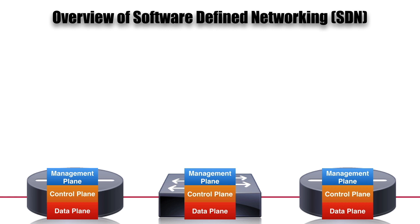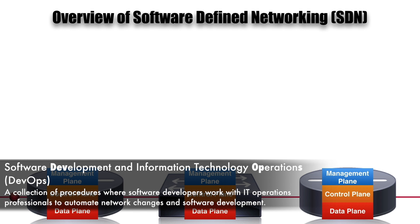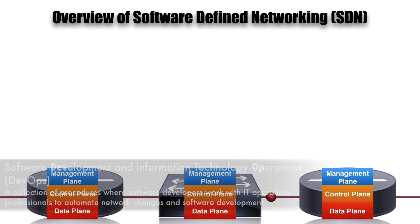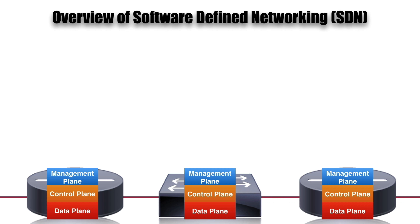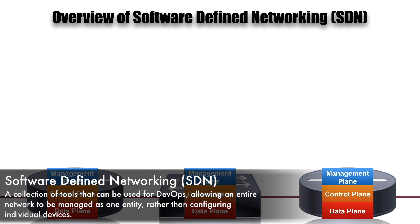As we get into our discussion of network programmability, there are a couple of terms we want to start with — DevOps and SDN. DevOps comes from combining software development with information technology operations. Instead of having software developers and IT operations professionals each working in their own silo, DevOps realizes they can complement one another — working in tandem to automate network changes and software deployment. SDN, software-defined networking, is a collection of tools that can be used for DevOps. It allows an entire network to be managed as one entity rather than managing each device independently.